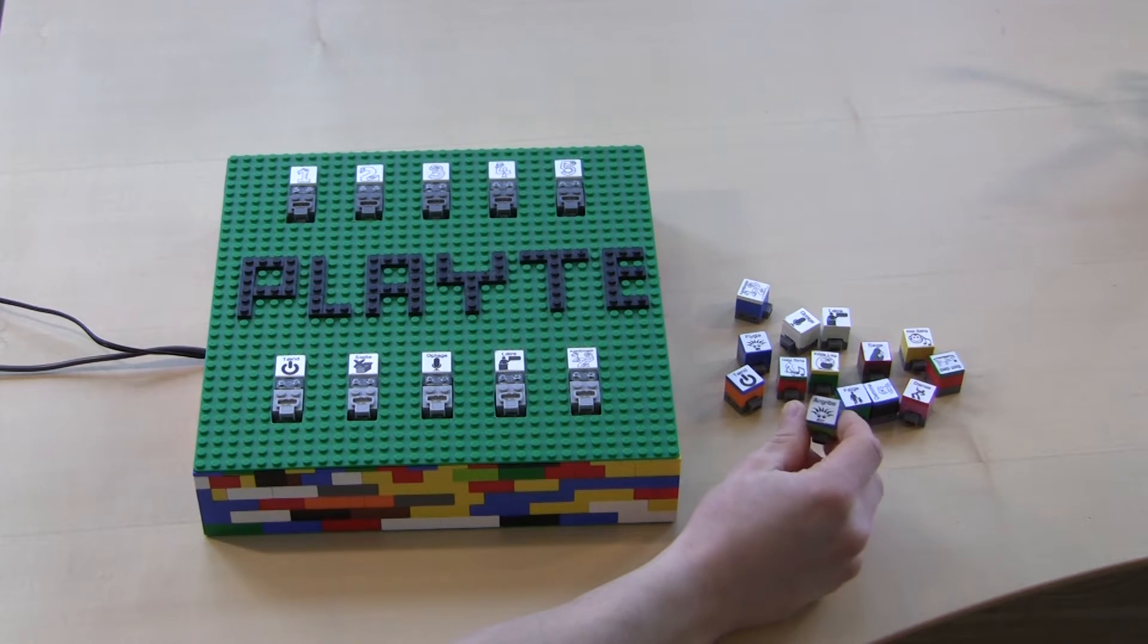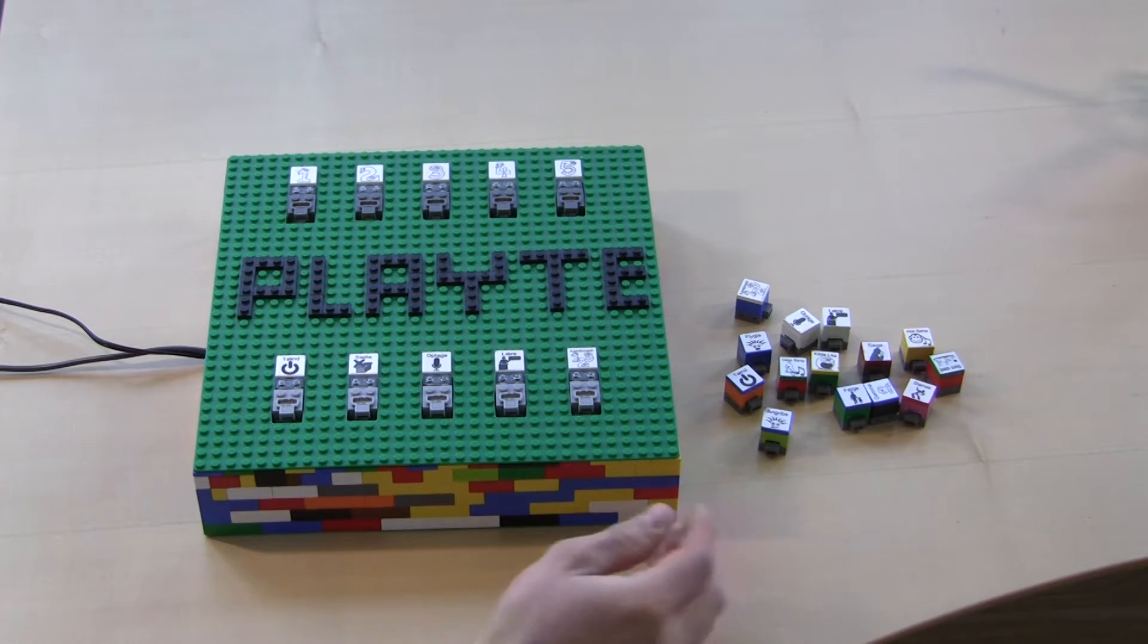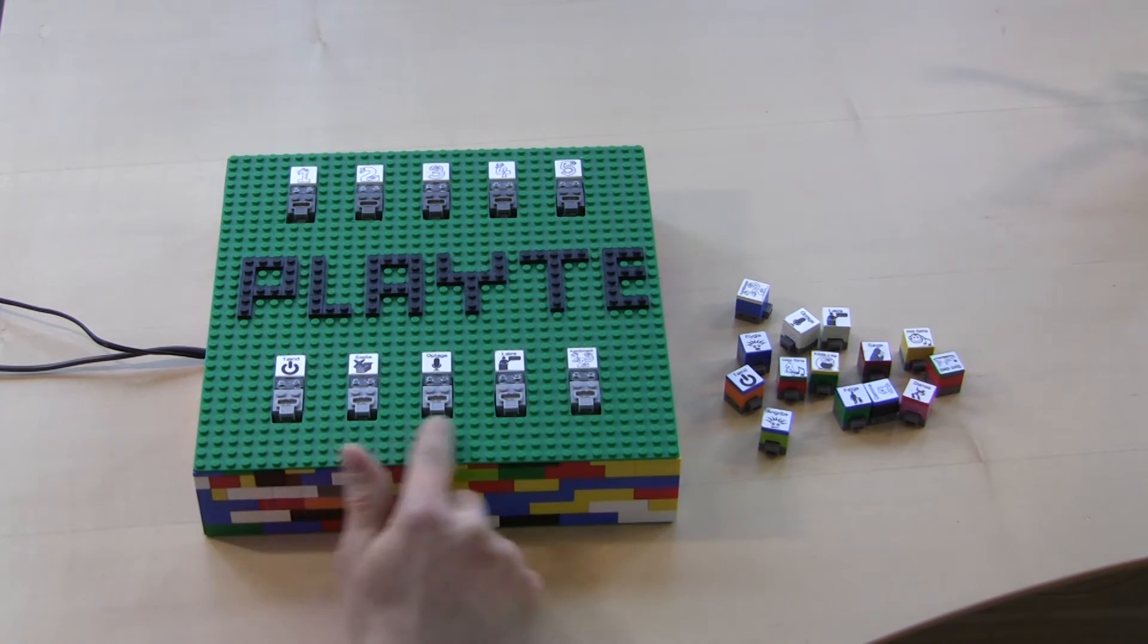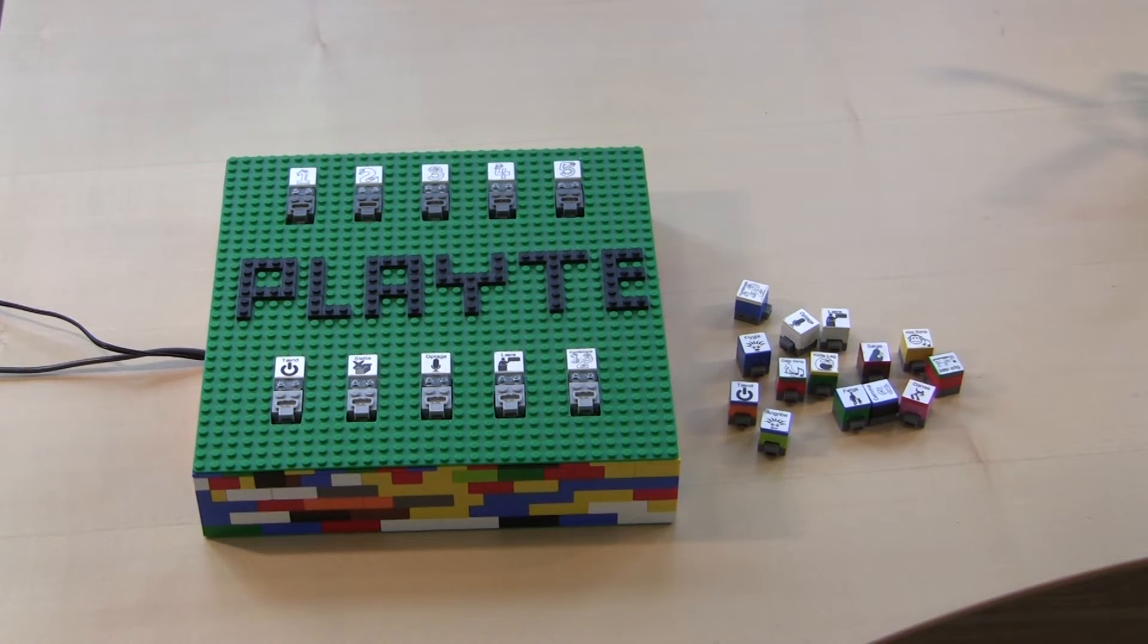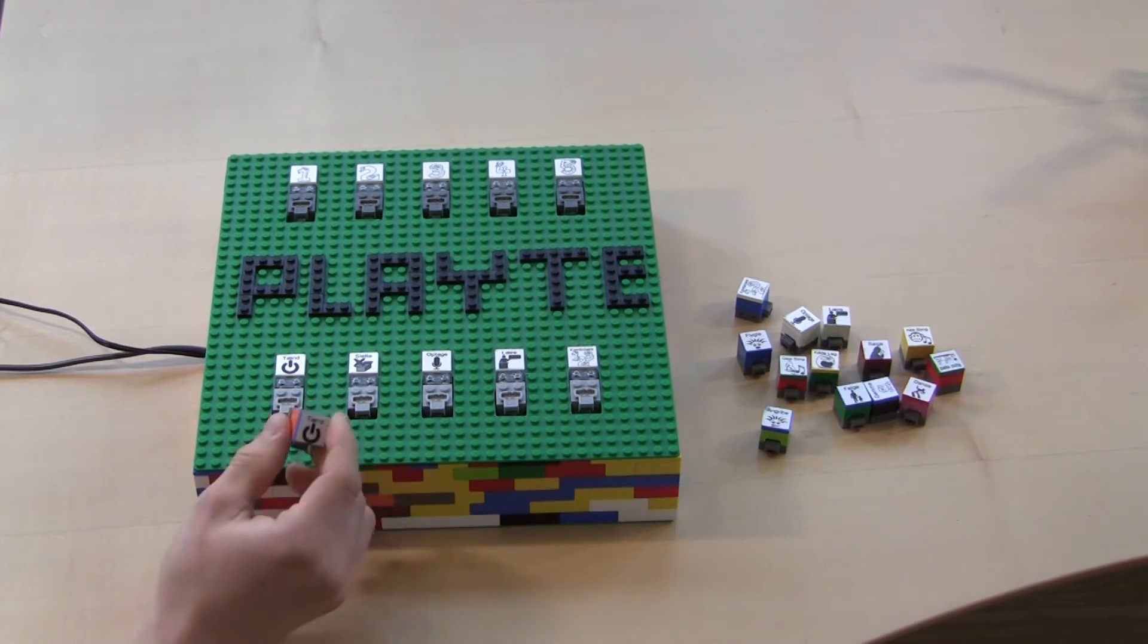These bricks here contain different behaviours and functionalities, and we can put them on the different sockets on the plate. Let's start by turning the plate on by attaching the on brick on this slot.